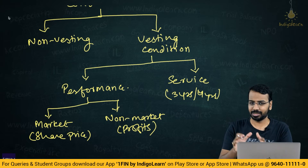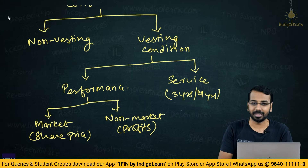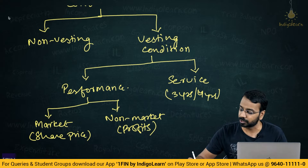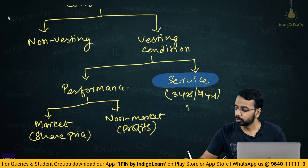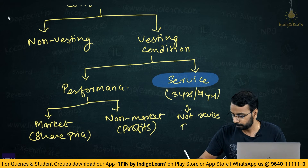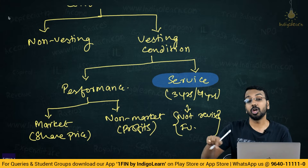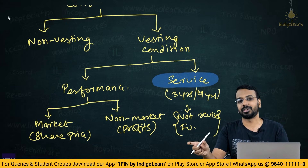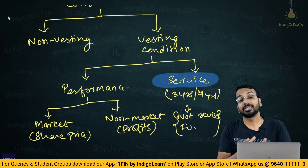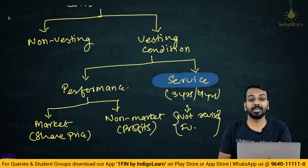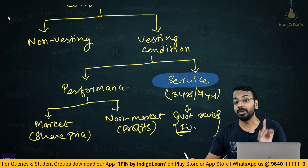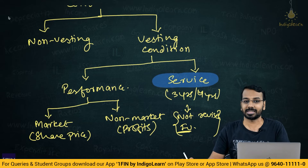A broader understanding of these conditions is sufficient at this level; more in-depth coverage comes at CA Final. For vesting conditions with a service condition, you will not revise the fair value. You take the fair value on the grant date and measure employee expenses based on the service condition only. Subsequently, if fewer employees are expected to be entitled, we revise the expense — but fair value will not be revised. The number of stocks that will vest may be revised.